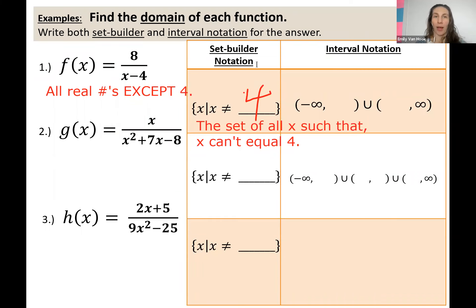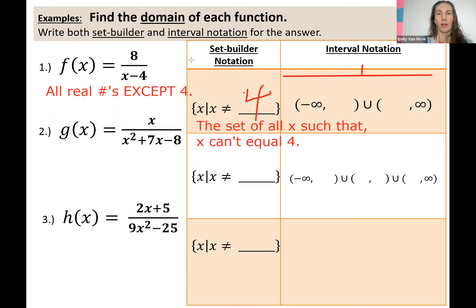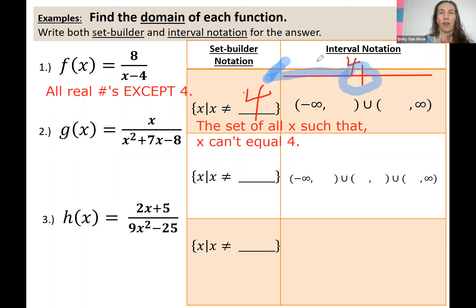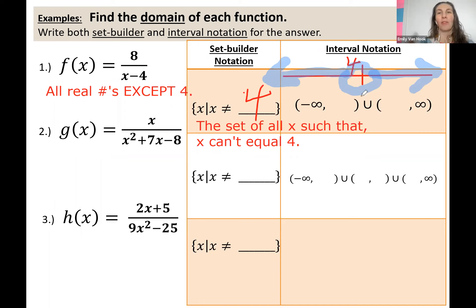Which brings us to interval notation. I believe we've seen this before, maybe back in our first unit when we were talking about compound inequalities and absolute value inequalities. I'm going to sketch a number line to remind us. I'll label 4 on the number line. Our domain is the entire number line except for 4 — all the numbers less than 4 going to the left, and all the numbers greater than 4 going to the right.